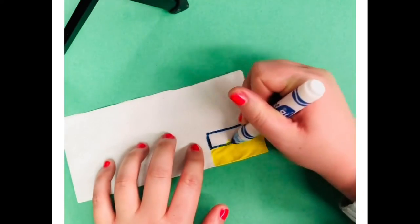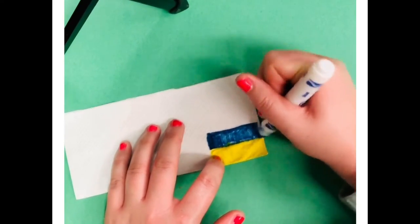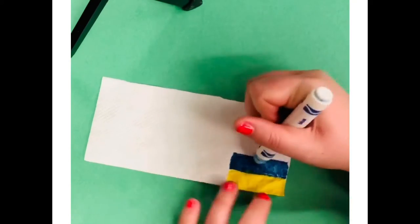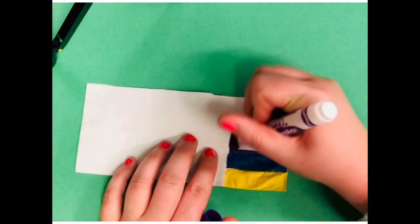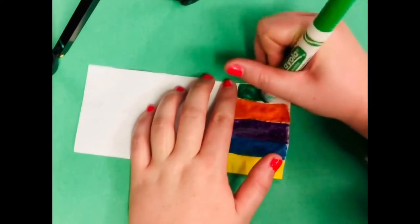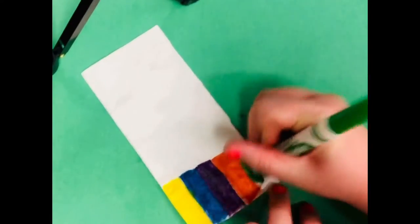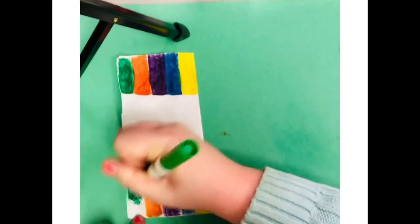Then we're taking our washable marker and we're just drawing our squares. So again it does have to be washable. It needs to say washable on it. It won't work with any other type of marker. I'm using my dark colors and drawing my little squares of colors. Color in very well and then I'm going to repeat the same pattern on the other side.